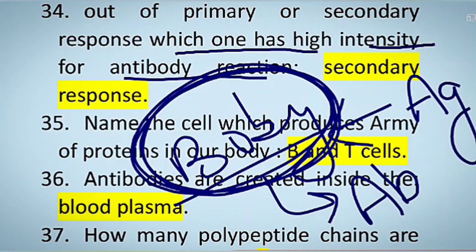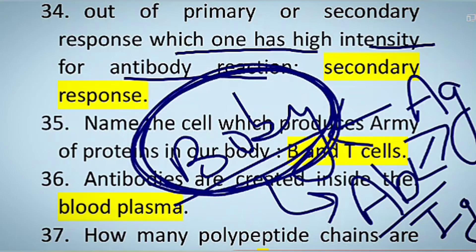We call antibodies Ig because their name is immunoglobulin. In the antigen-antibody reaction, if the antibodies win, the individual is saved; but if the antigen wins, infection results.